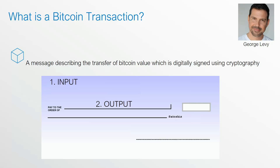Then you need an output, which is where those Bitcoins are going to be transferred to. So you've got the input, which is where the Bitcoins are coming from, and you've got the output, which is where the Bitcoins are headed. And finally, you need the amount — that's how many Bitcoins are going to be transferred from the inputs over to the outputs.